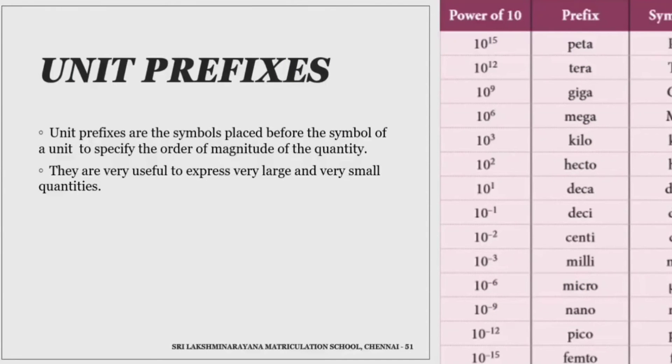Unit prefixes are the symbols placed before the symbol of a unit to specify the order of magnitude of the quantity. They are useful to express very large and very small quantities. K is the unit prefix in the unit kilometer. A unit prefix stands for a specific positive or negative power of 10.